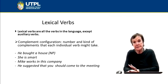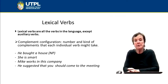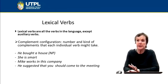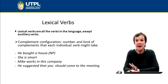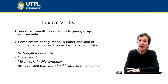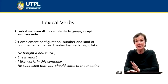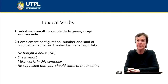In the second example it says 'she's smart.' Smart is an adjective. So we can say that the complement configuration for this verb is verb be plus an adjectival phrase. Then, 'Mike works in this company.' In this clause, the complement configuration for the verb work is a prepositional phrase: 'in this company.'